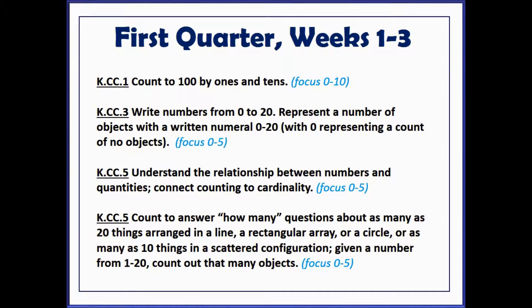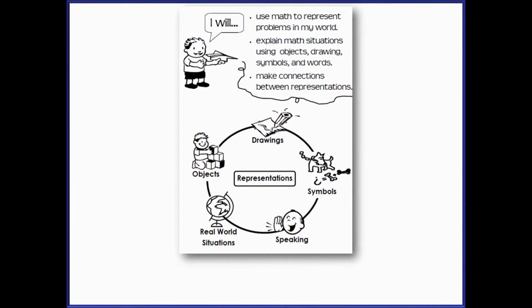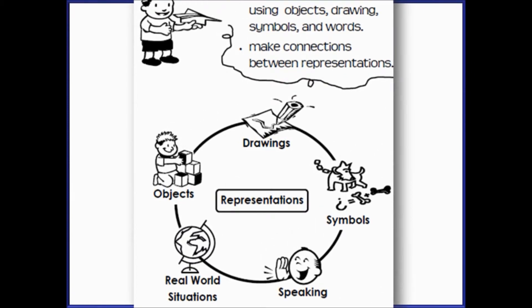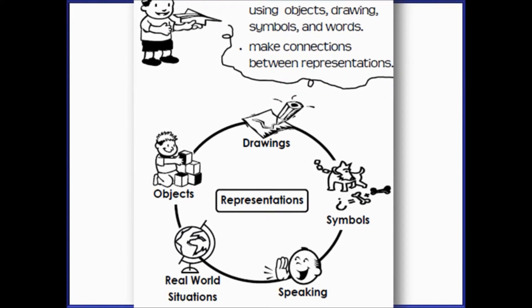As you do your daily counting routines, focusing on rote or oral counting — which is standard CC1 — be sure to make connections between other representations, for example as seen on this practice standards poster. This means that as students orally count, they should have opportunities to see sets of objects and numbers on the number line or hundreds charts. In addition, try to use rote counting for solving real world problems. Showing students a variety of representations allows them to better understand the counting process and makes connections between other standards.